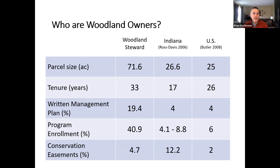You can look at this kind of information from a few different data sources. This is older data but it's pretty similar across years regarding woodland owners in Indiana. This was a publication about Indiana woodland owners done by a Purdue graduate student. I'm also part of the Indiana Woodland Steward Institute and we surveyed readership of that publication. When you look at things like parcel size, years of ownership, the percentage with a written management plan, the percentage enrolled in some type of program — classified forest or farm bill — and the percent with conservation easements, those really vary depending on the information source.